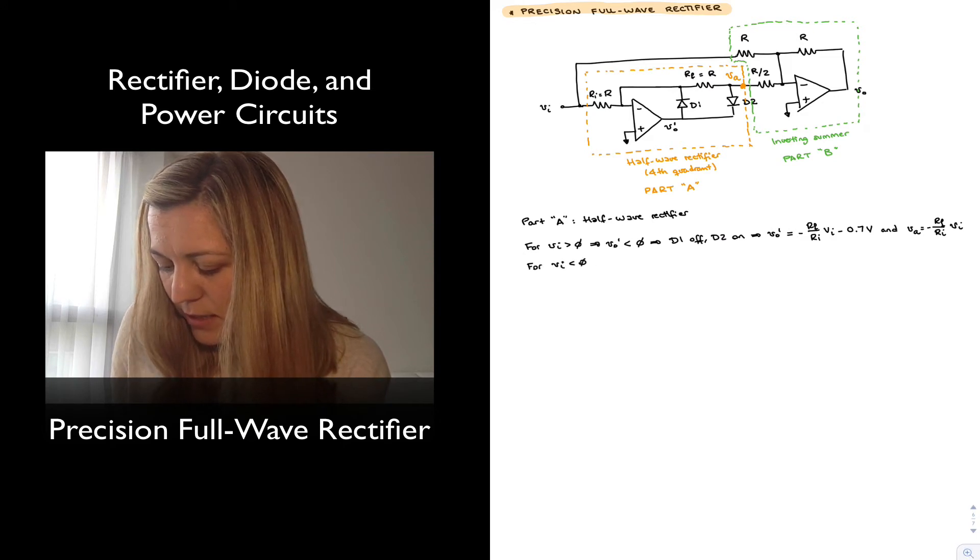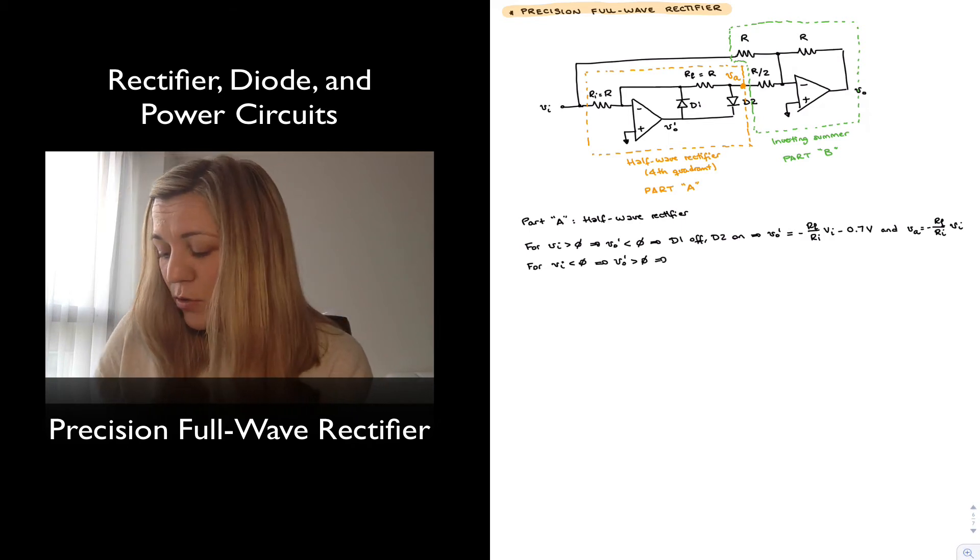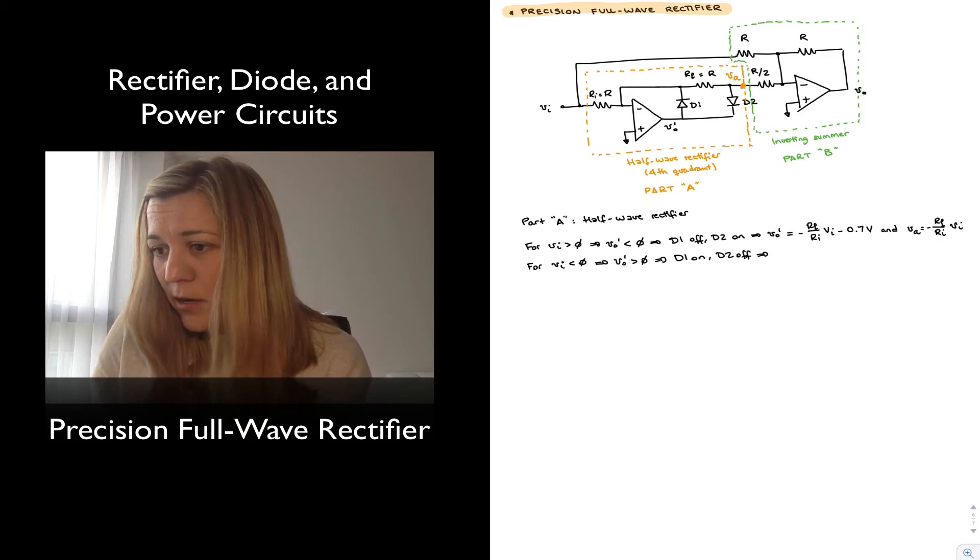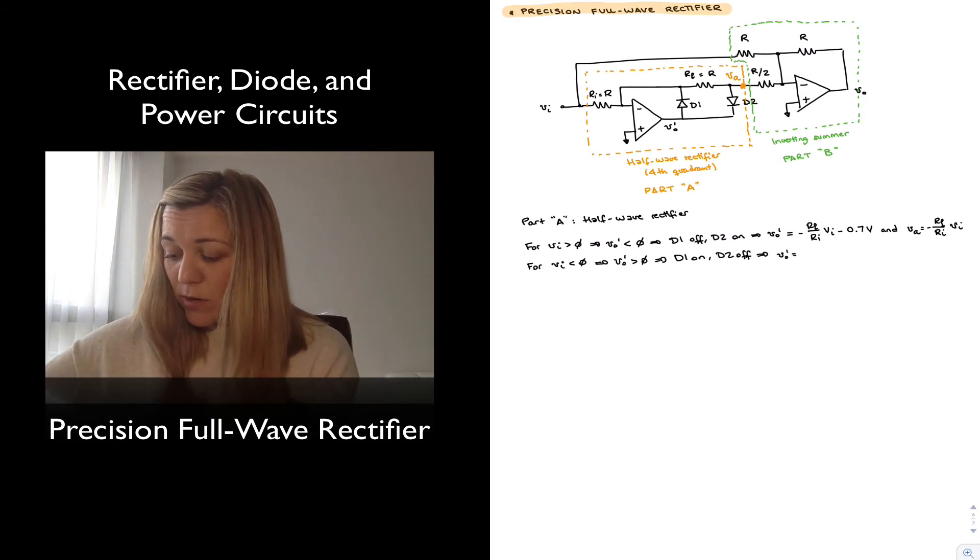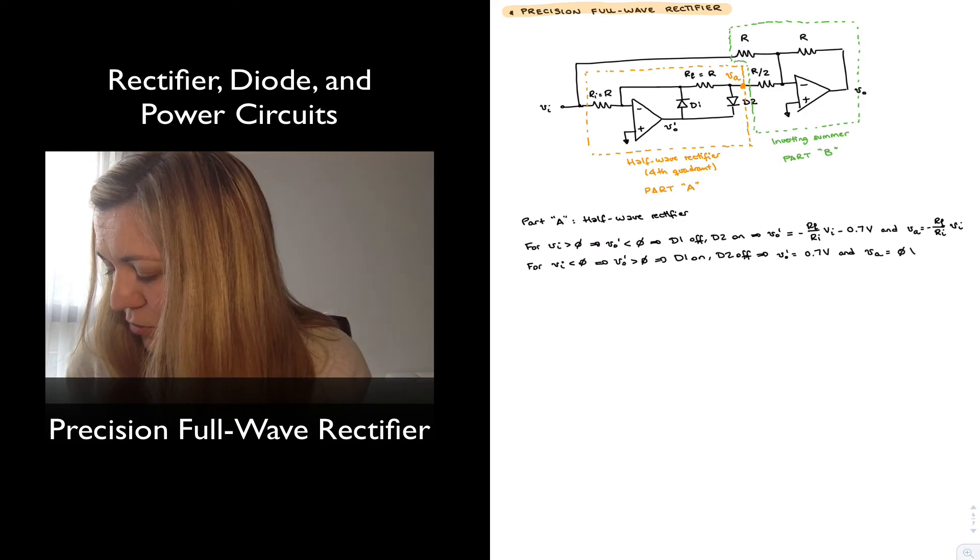For V in negative, we have that the output terminal of the op-amp will try to go in a positive direction, which means D1 is the one that's going to be forward biased, D2 will be reverse bias and Vout prime. Since D1 is forward biased and the cathode of D1 is sitting at a virtual ground, so 0 volts, then Vout prime is going to be set to 0.7 volts by the op-amp.